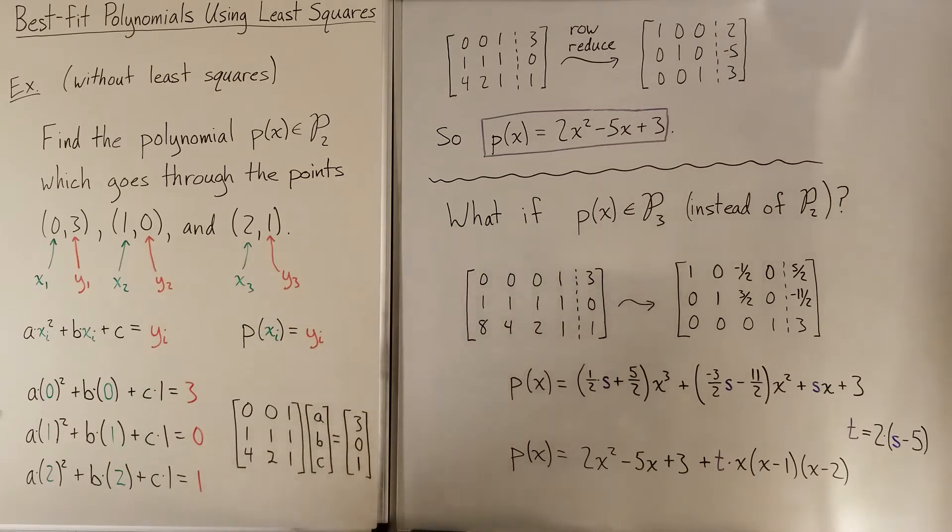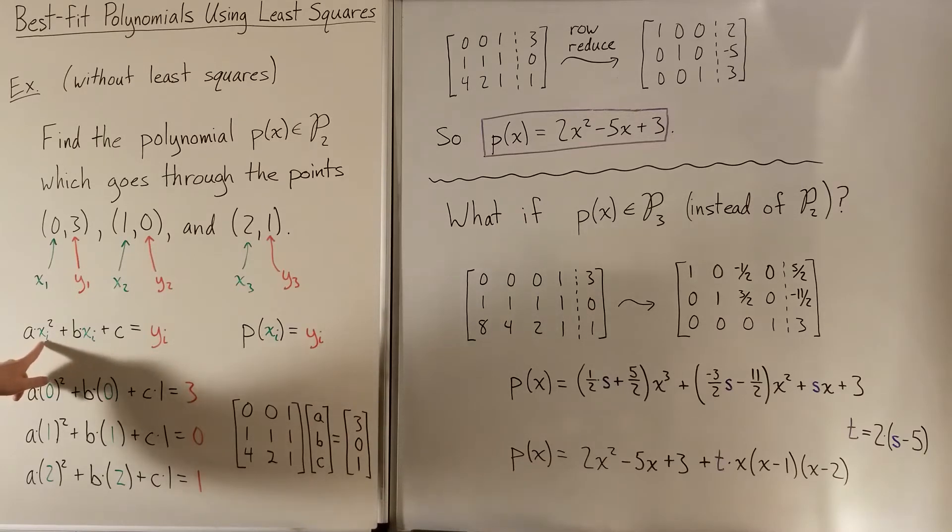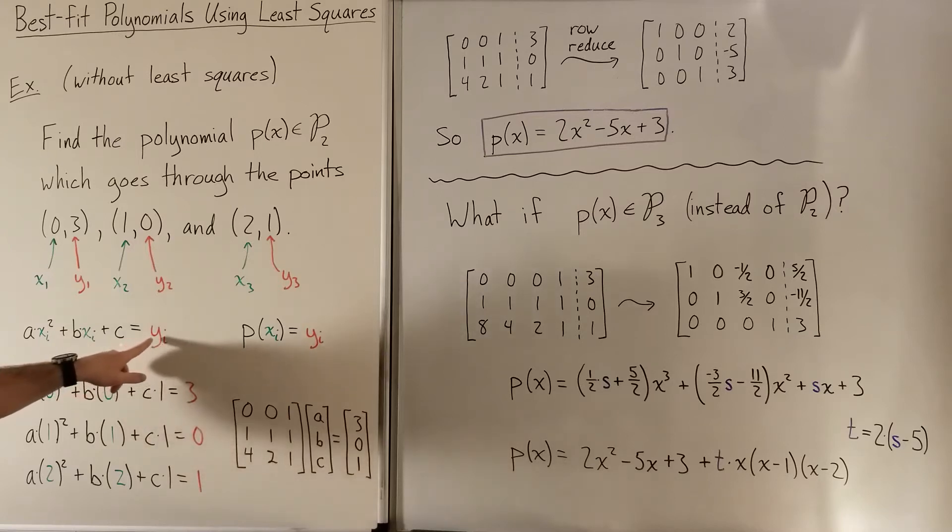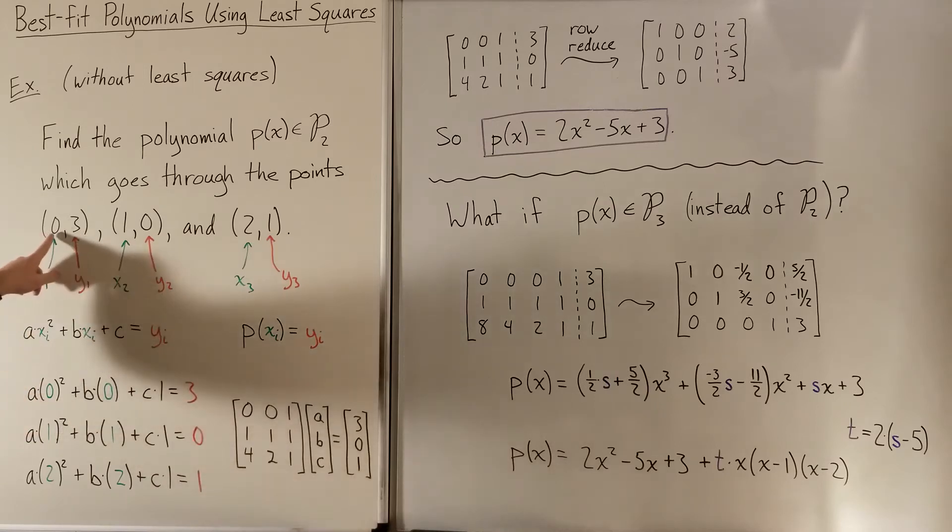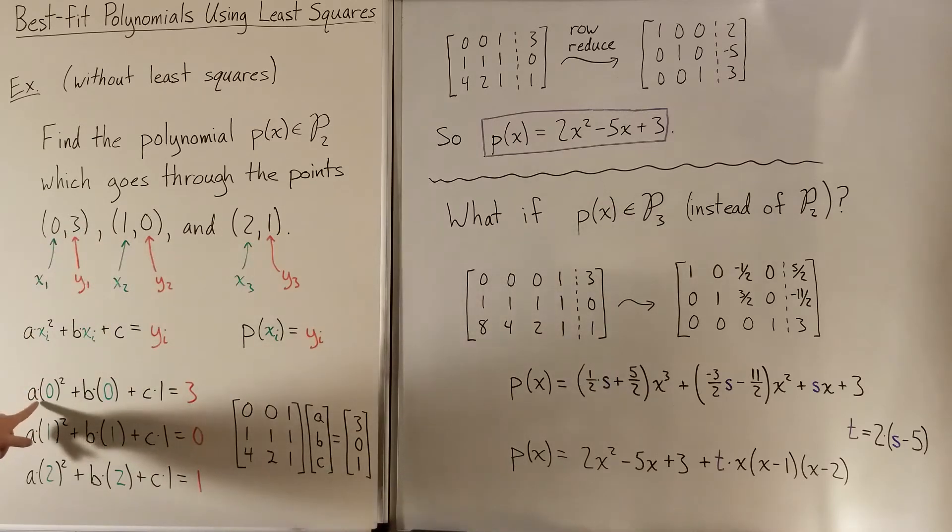So what we're going to do is we're going to take our set of points here that we have. We have (x1, y1), (x2, y2), and (x3, y3), and we're just going to plug them in, and so we get three equations of this format: a*xi^2 + b*xi + c = yi. Okay, so for this first point we have (0,3), and that's going to give us a*0^2 + b*0 + c. And I'm just going to write a 1 here just to have all the coefficients written down, and then we're going to set that equal to 3. We're going to do the same thing here for our second point, and then again for our third point.